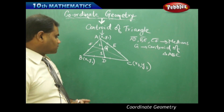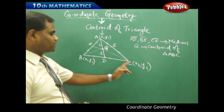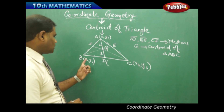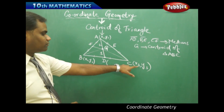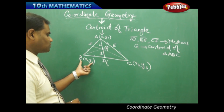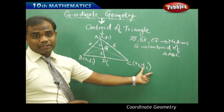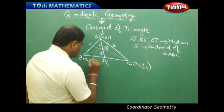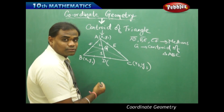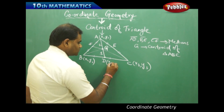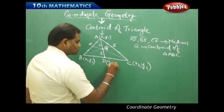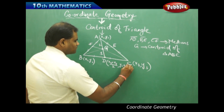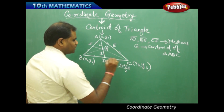D is the midpoint of BC. Using the midpoint formula, since D is the midpoint of B(x2, y2) and C(x3, y3), the coordinates of D are ((x2 + x3)/2, (y2 + y3)/2).